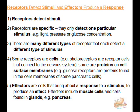Receptors detect stimuli and effectors produce a response. Receptors are specific — they only detect one particular stimulus. For example, light, pressure, or glucose concentration.